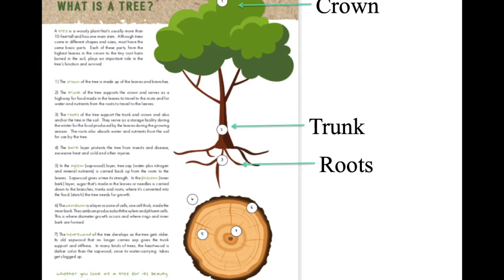Now if we cut the tree in half and look at the cross section of the tree, would you be able to name the parts there — sort of on the inside? The outside covering of the tree that protects it from harsh winters, hot summers, and rain and all the weather, that's called the bark. The inside is called the xylem. The xylem acts as a transportation system that transports nutrients from the roots up to the leaves and from the leaves down to the roots. It collects energy and changes that into nutrients and food called photosynthesis from the leaves.